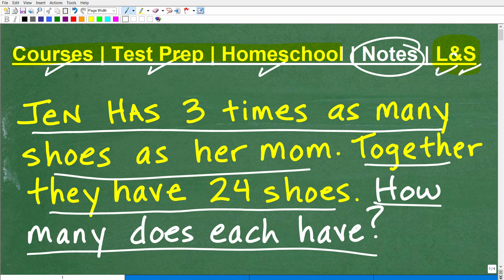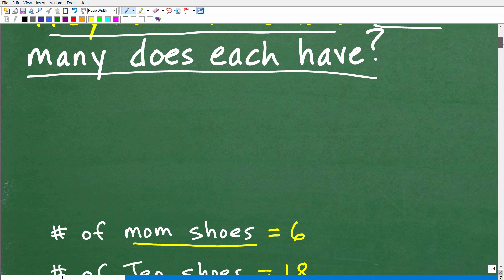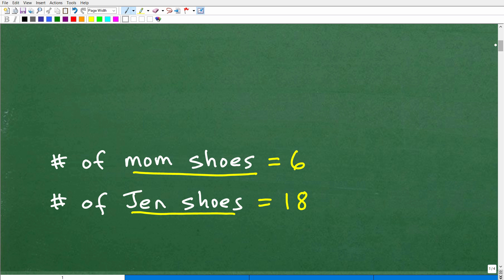Okay. So let's go ahead and take a look at the answer to this question. And here it is. So the number of shoes the mom has is 6, and the number of shoes Jen has is 18. So that is the answer.